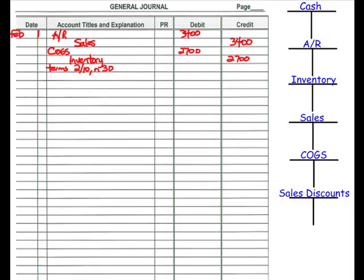Let's post that journal entry to the T accounts. Accounts receivable goes up by $3,400, so we put that on the debit side. Sales goes up by $3,400, so we put that on the credit side. Cost of goods sold gets $2,700 on the debit side, and we take $2,700 out of the inventory account.